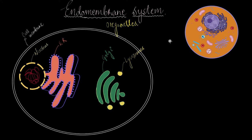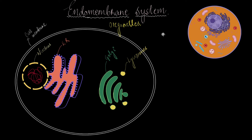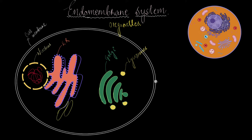Vacuoles are not found in all cells. For the endoplasmic reticulum, we have both rough and smooth — rough has ribosomes attached to it, and smooth does not have ribosomes attached to it. We will discuss each of these organelles in detail, but before that I would like to show you how they function and what they actually do — what gave them the name 'endomembrane system.'